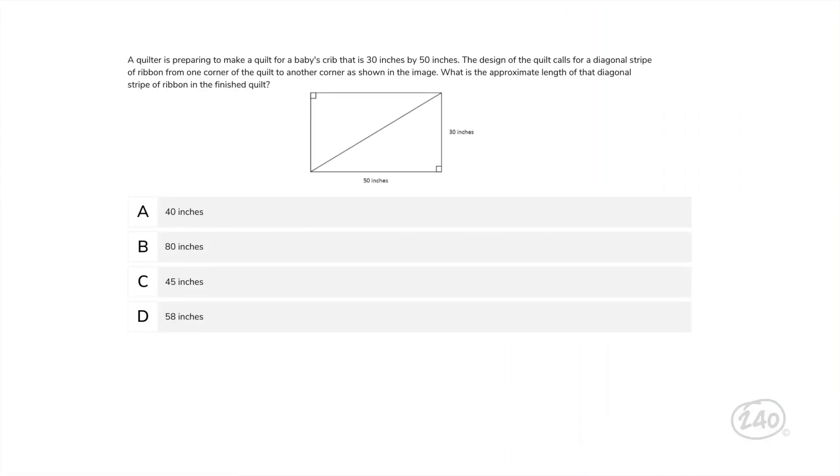A quilter is preparing to make a quilt for a baby's crib that is 30 inches by 50 inches. The design of the quilt calls for a diagonal stripe of ribbon from one corner of the quilt to another corner as shown in the image. What is the approximate length of that diagonal stripe that goes from corner to corner? Is it 40 inches, 80 inches, 45 inches, 58 inches?